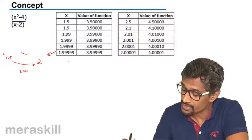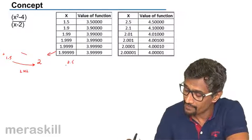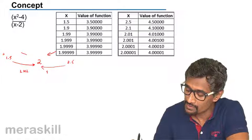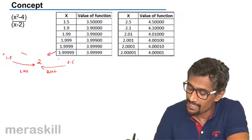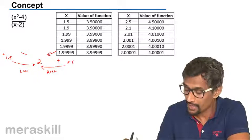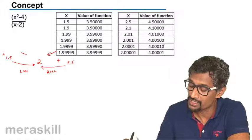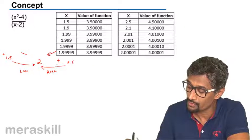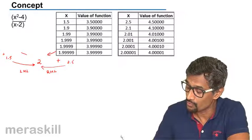On the contrary, you start from 2.5 and move towards two. This is called the right hand limit. As you move from a bigger value, value bigger than two, and go close and close to two. So we start with X is 2.5, 2.1, 2.01, 2.001.